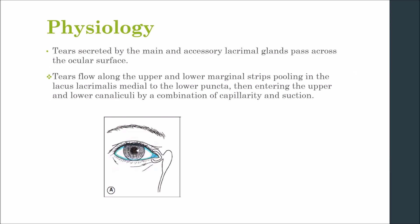Moving to the physiology: tears are secreted by the main and accessory lacrimal glands and pass across the ocular surface. A variable amount of the aqueous component is lost by evaporation, with the remainder draining by the following mechanisms. Tears flow along the upper and lower marginal strips, pooling in the lacus lacrimalis — medial to the lower puncta — and then enter the upper and lower canaliculi by a combination of capillarity and suction.